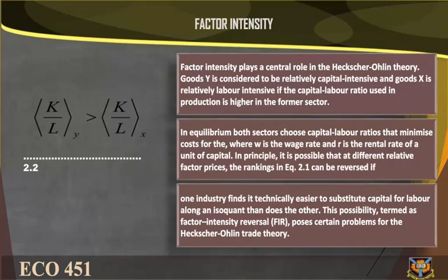Factor Intensity. Factor intensity plays a central role in the Heckscher-Ohlin theory. Good Y is considered to be relatively capital intensive and good X is relatively labor intensive if the capital-labor ratio used in production is higher in the former sector. In equilibrium, both sectors choose capital-labor ratios that minimize cost for a given ratio ω, where ω equals w over r, w being the wage rate and r being the rental rate of a unit of capital.